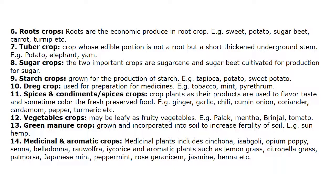Tuber crops are those whose edible portion is not a root but a short, thickened underground stem. Examples include Potato, Elephant Yam. Sugar crops: the two important crops are Sugarcane and Sugar Beet, cultivated exclusively for extracting sugar.